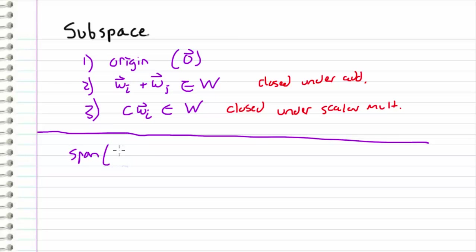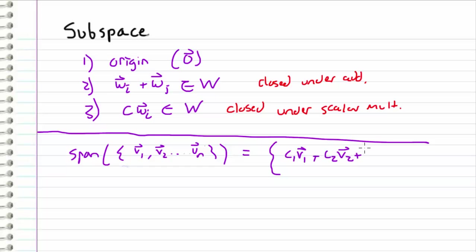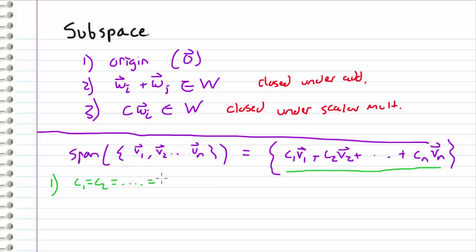The span of a vector set V1, V2, ..., Vn is equal to the set of all linear combinations of those vectors. We can recognize that the span of any vector set is in fact a subspace. First, if all scalars C1 through Cn equal zero, we get the zero vector — zero times V1 plus zero times V2, and so on — so the zero vector is an element of the span, meaning the span contains the origin.